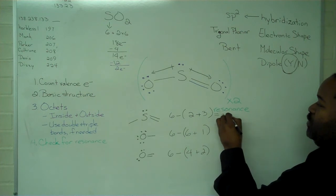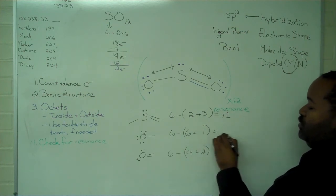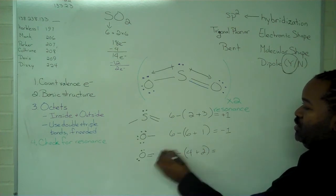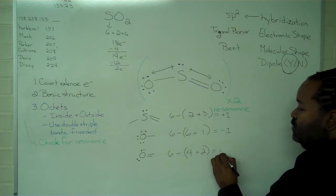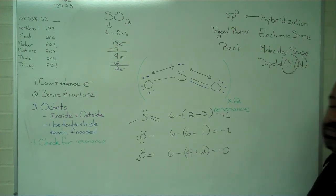So for the sulfur, we expect a charge of plus 1. For the singly bonded oxygen, we expect a charge of negative 1. And for the doubly bonded oxygen, we expect a formal charge of 0.